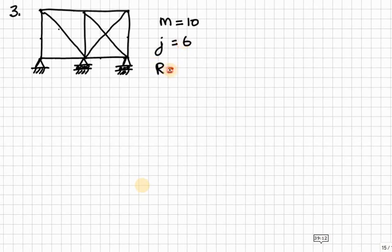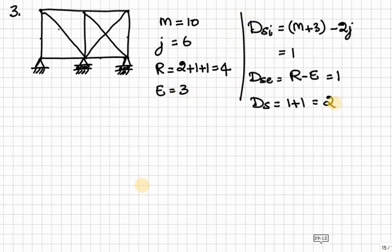So, R is equal to 2, 1, 1. And, of course, E is equal to 3. Now, we can apply in the expression. So, Dsi is equal to 1. Dse is equal to 1. Therefore, total indeterminacy is equal to 2.